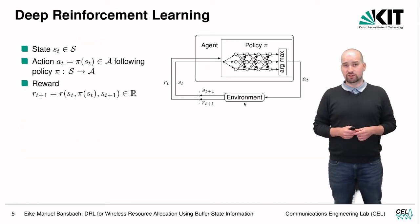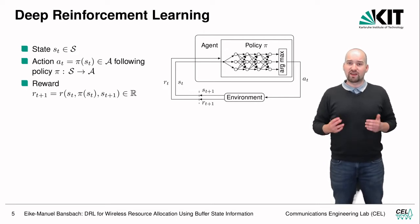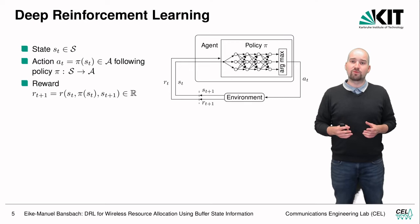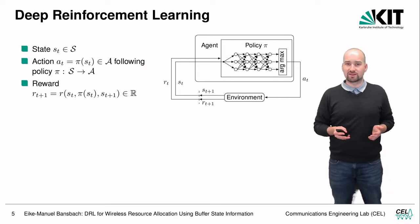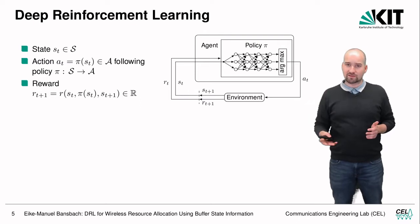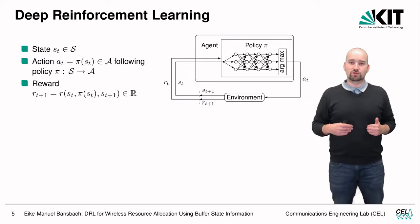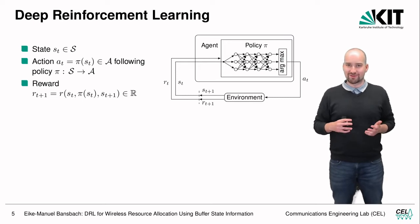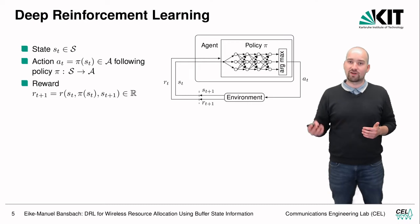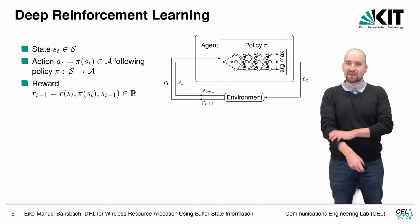Deep reinforcement learning is characterized by an environment and an agent acting on it. The environment is described by a certain state, which is given to the agent. The agent follows a policy and, depending on the state, chooses an action that acts on the environment. We then receive a reward indicating whether the action was good, and the environment moves on to the next state at time t+1.